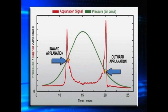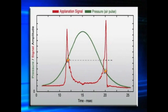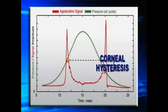One might expect that the pressure measured at the inward and outward applanation events would be the same. However, due to its viscous nature, the cornea resists the dynamic force of the air puff, resulting in a damping effect that manifests itself as a discrepancy between the applanation pressures. We refer to this phenomenon as corneal hysteresis.